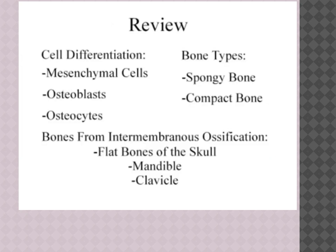In review: we began with mesenchymal stem cells which, after replicating, differentiated into osteoblasts. The osteoblasts released an uncalcified bone matrix, and after the matrix was calcified, it differentiated again into osteocytes. The initial bone created is spongy bone, which can then be remodeled into compact bone. Examples of bones created through intramembranous ossification are the flat bones of the skull, the mandible, and the clavicle.